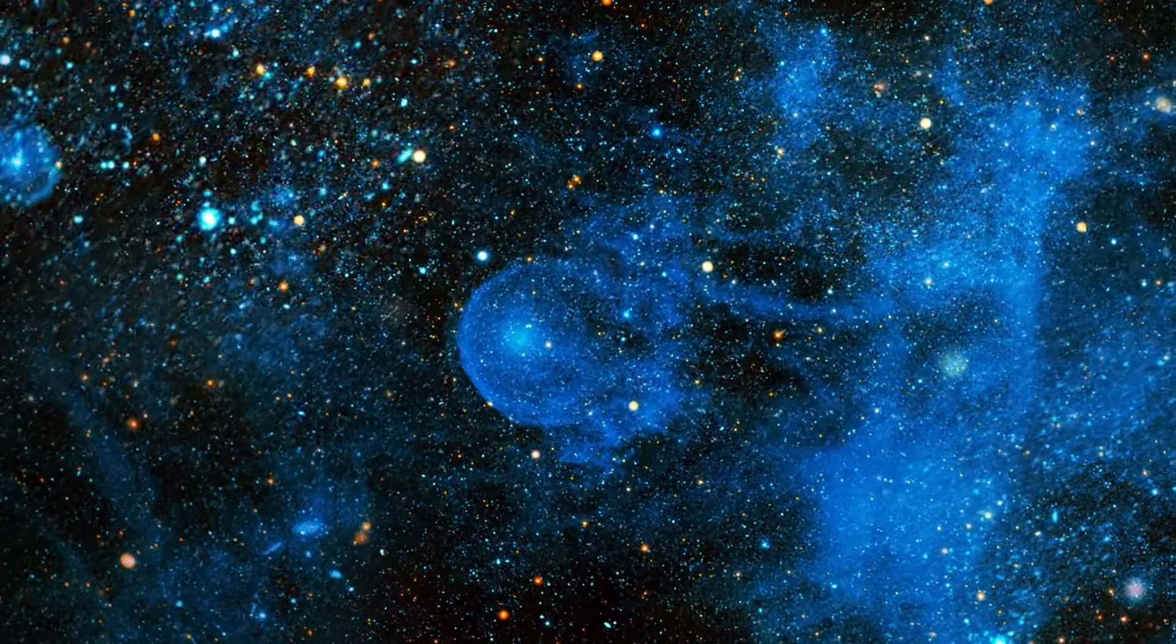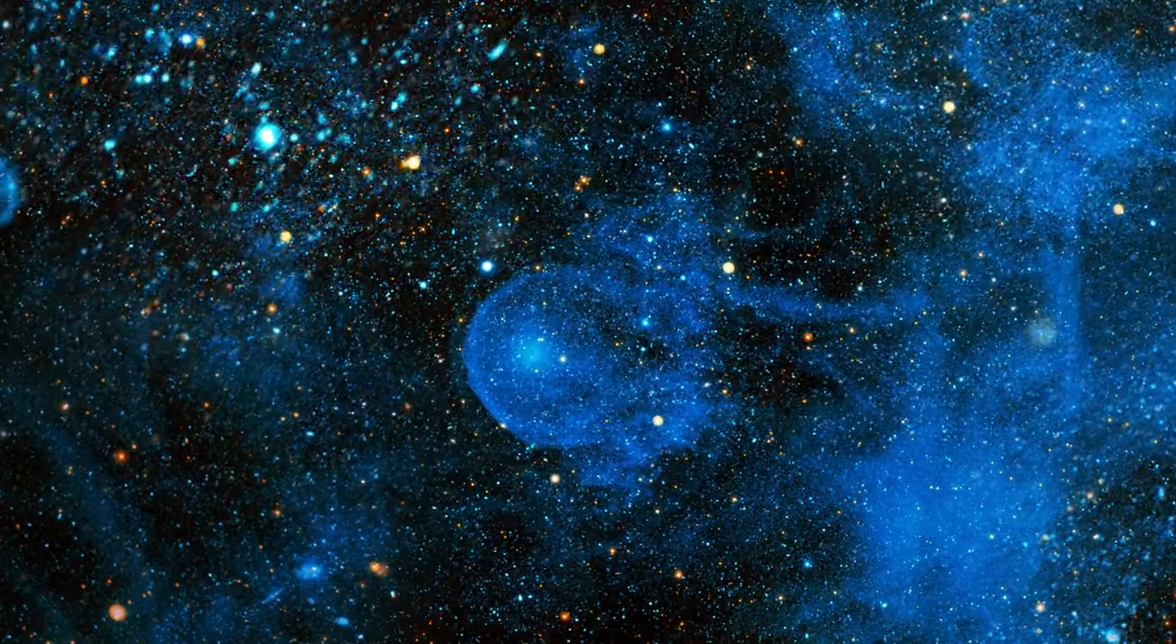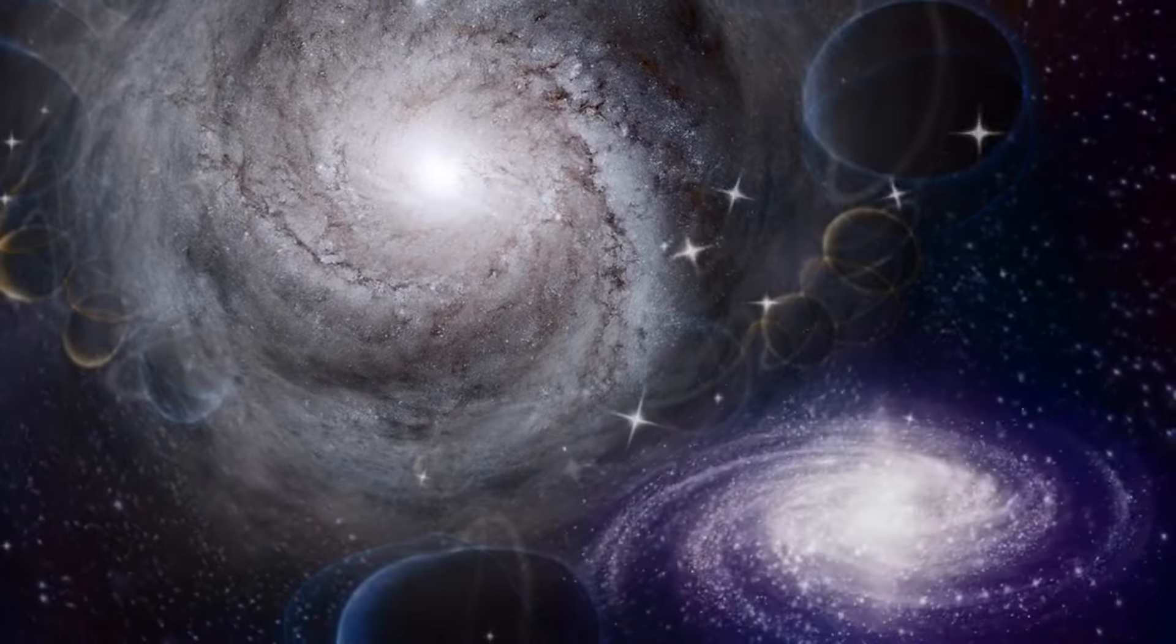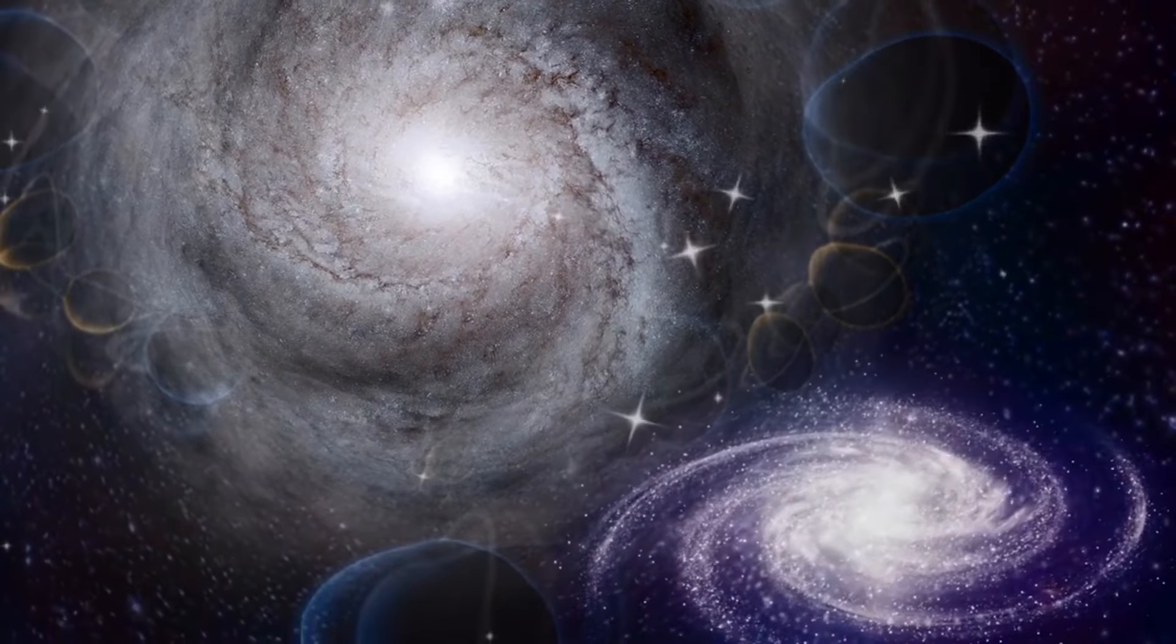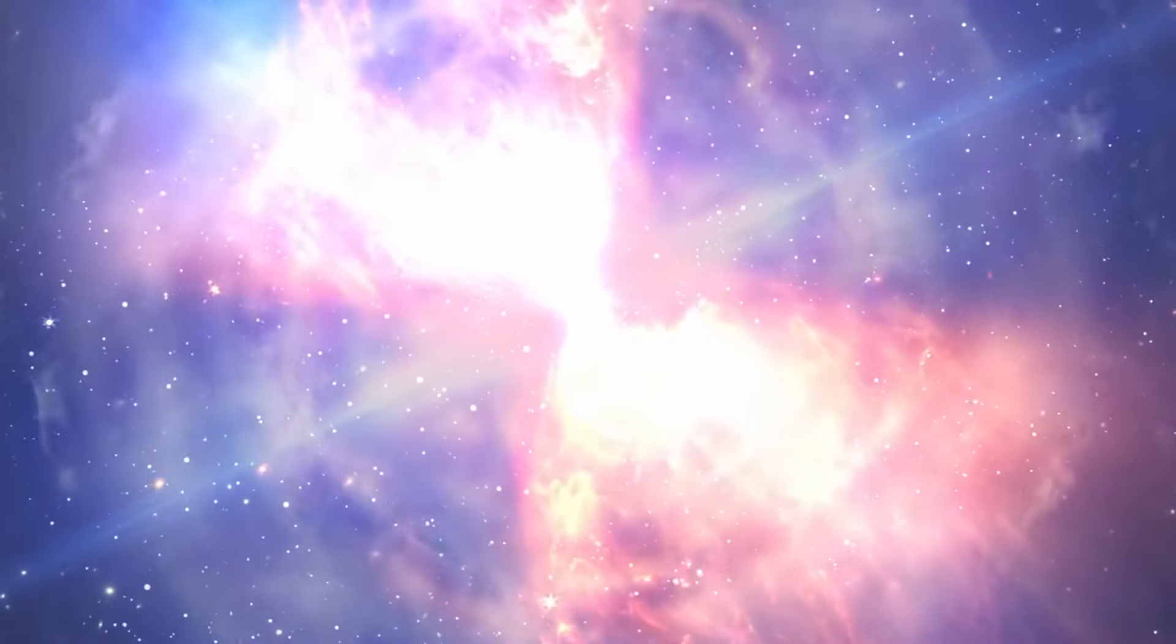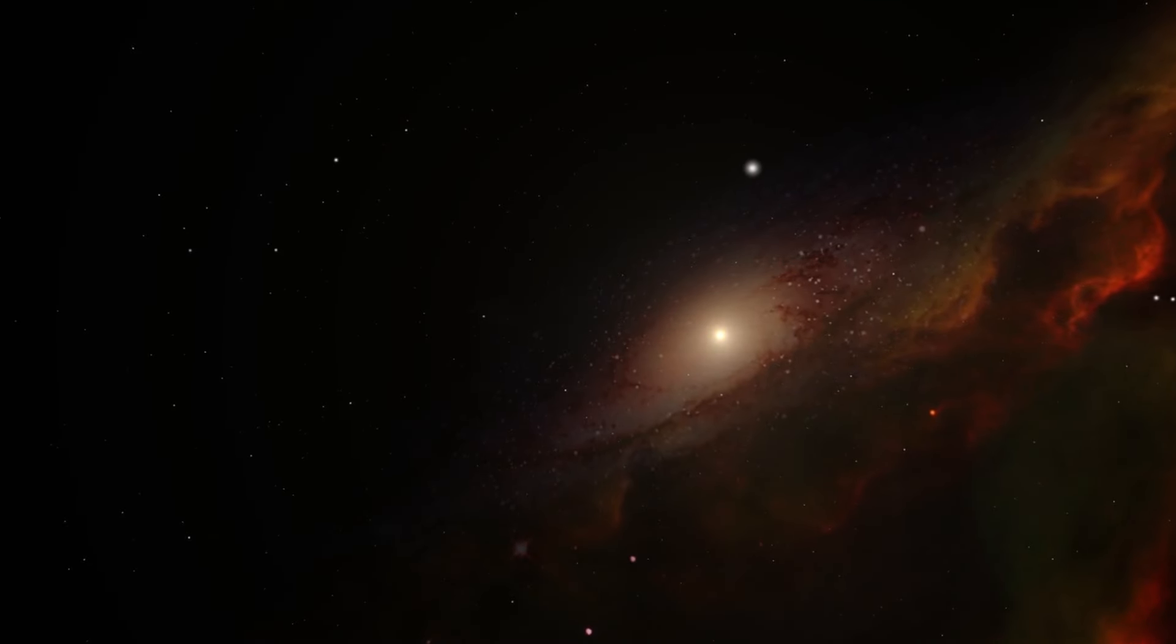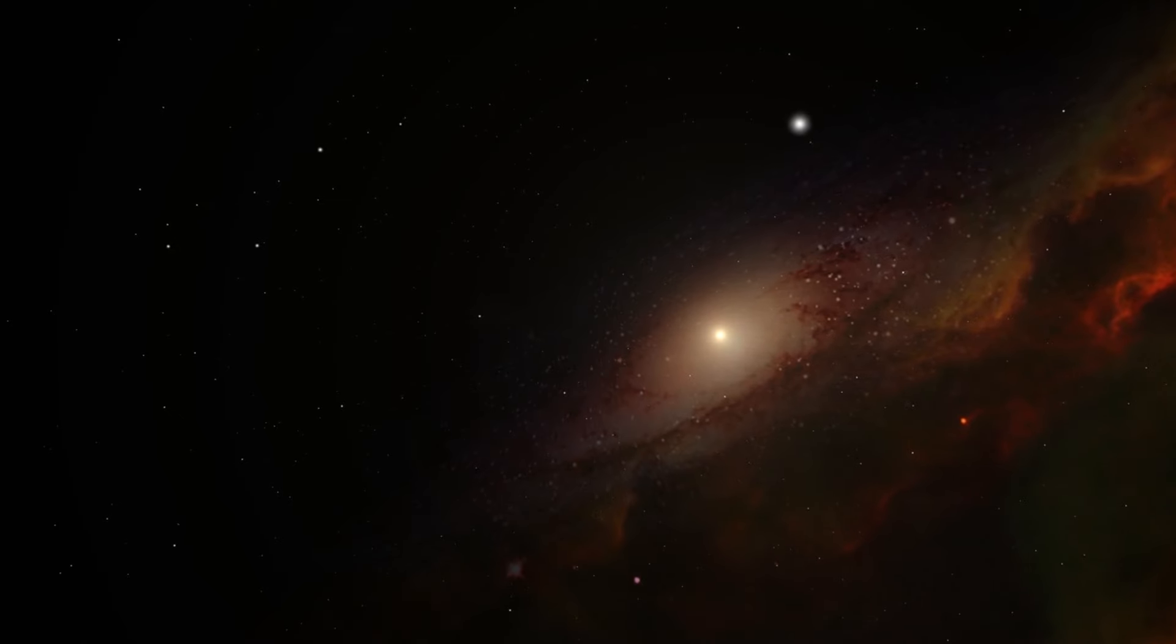The behavior of Betelgeuse also has broader implications for our understanding of galaxy evolution. Galaxies are vast collections of stars, and their evolution is influenced by the life cycles of the stars within them. Supernovae play a crucial role in this process by distributing heavy elements throughout the galaxy, which can trigger the formation of new stars and planetary systems. By studying Betelgeuse and its eventual supernova, astronomers can gain insights into how these events contribute to the dynamic and ever-changing nature of galaxies.